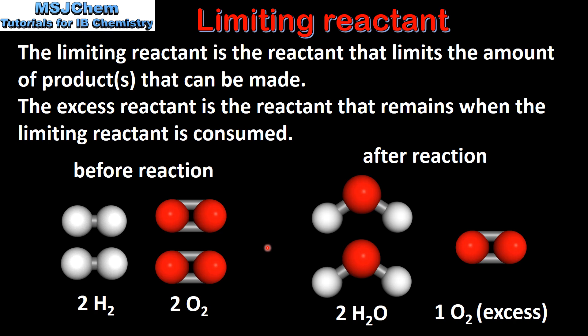To summarize: the hydrogen is the limiting reactant which limits the amount of product that can be made, and the oxygen is the excess reactant that remains after the limiting reactant has been consumed in the reaction.